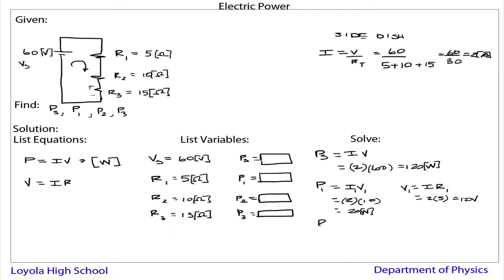Power 2, so I'm going to repeat this same process. It's IV, which is 2 times, now the voltage we don't know, so we have to find the exact voltage here. So it's I times R2. 2 times, the resistance of the second guy is 10 ohms, so it's 10 ohms here, which is 20 volts. So we get, this is times 20. So it's 2 times 20, it's equal to 40 watts.